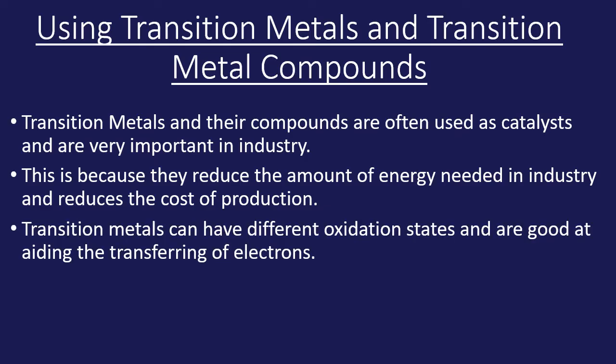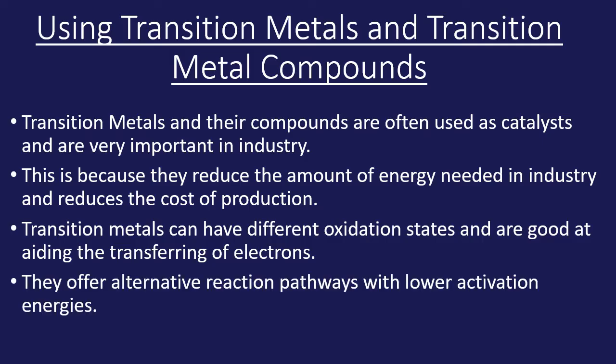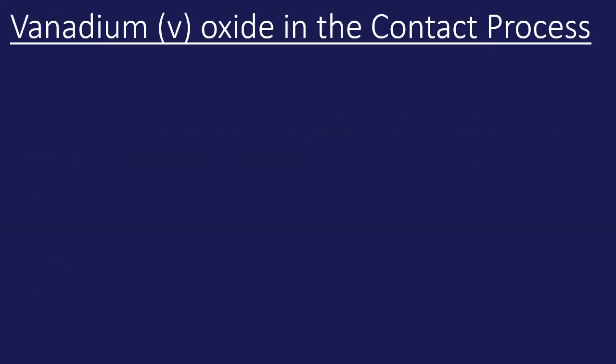Transition metals have lots of different oxidation states — you may recall this from unit one. They're very good at aiding the transfer of electrons and they offer alternative reaction pathways with lower activation energies. That's what a catalyst does. So let's look at a specific example: vanadium oxide in the contact process.